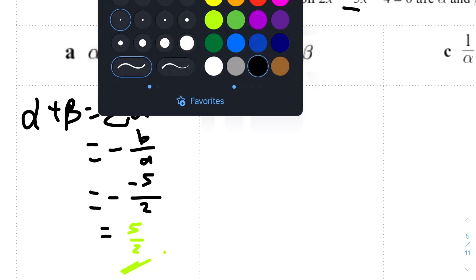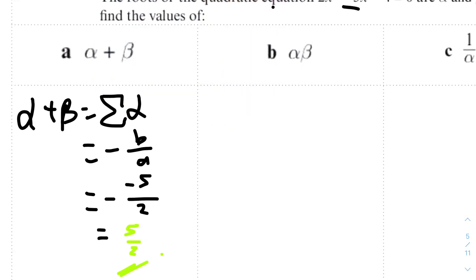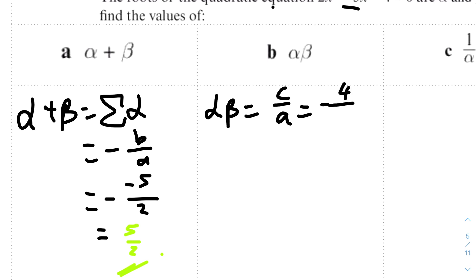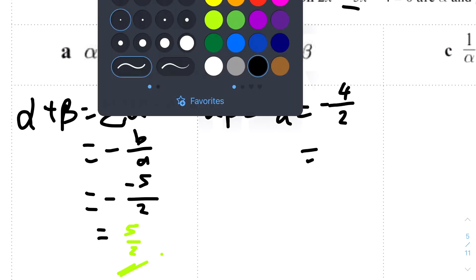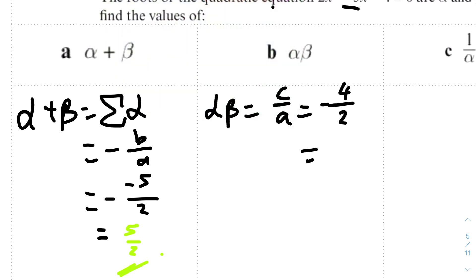For part b, alpha times beta is the product of the pair of roots, equal to c over a. Here c is minus 4 and a is 2, so minus 4 over 2 equals minus 2.